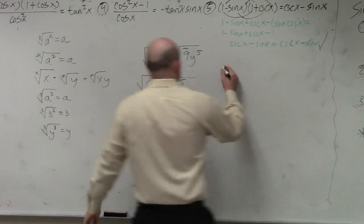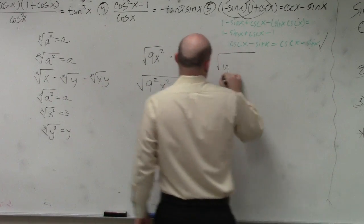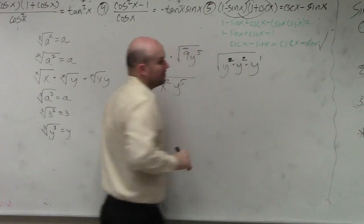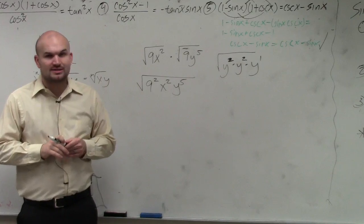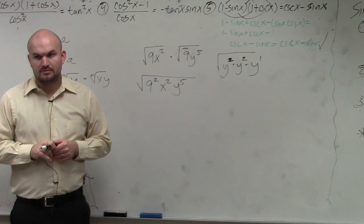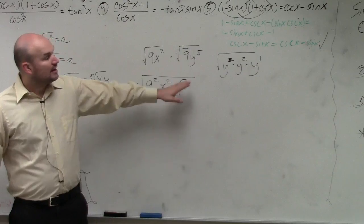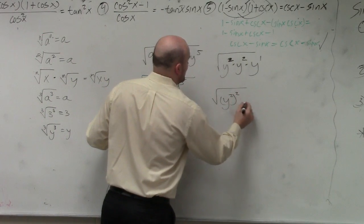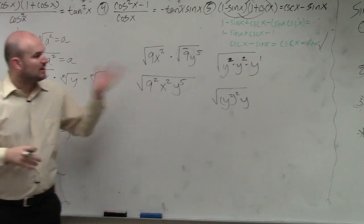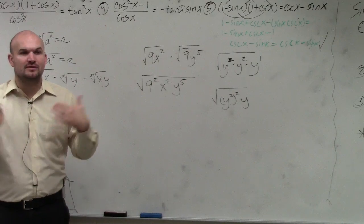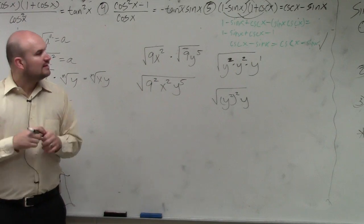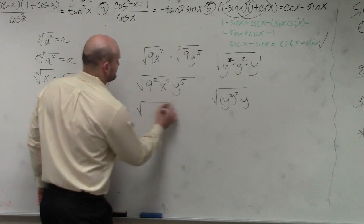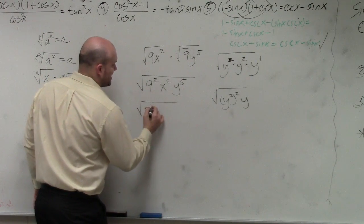There are two ways to do this. We could rewrite this as y squared times y squared times y to the first power. Do you agree — y squared times y squared times y is still y to the fifth? That's one way. The way I prefer is y squared raised to the second power, times y. Because y squared raised to the second power is y to the fourth, and times y gives y to the fifth. So that's the way I'm going to write it for this problem, but it doesn't matter which one you use.